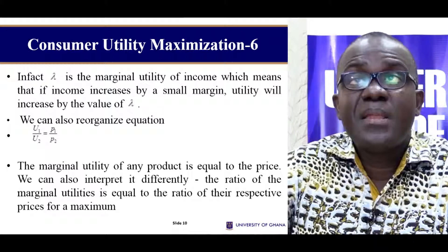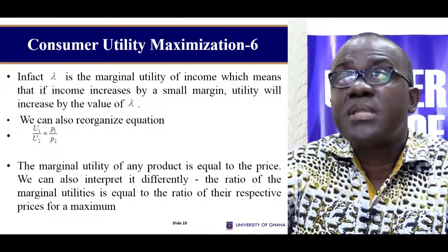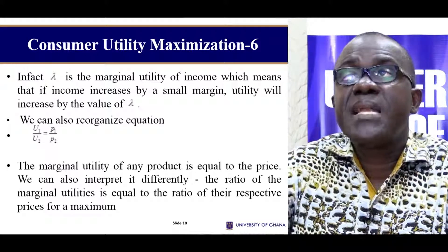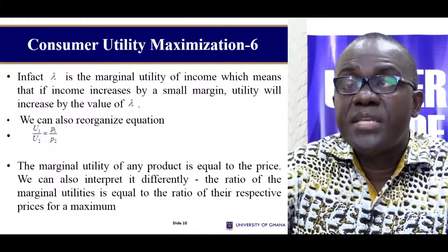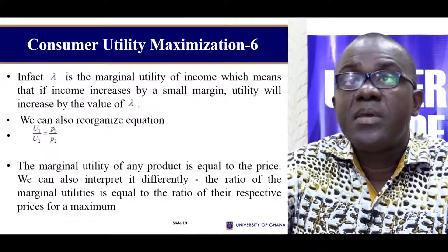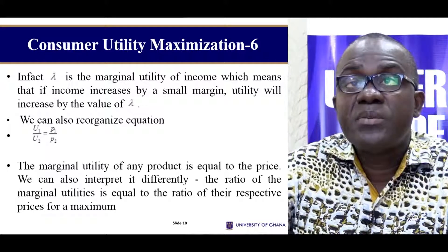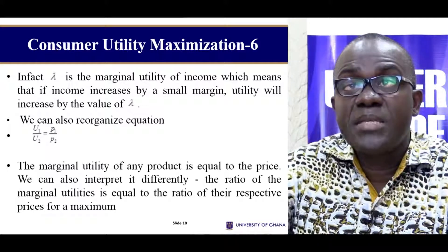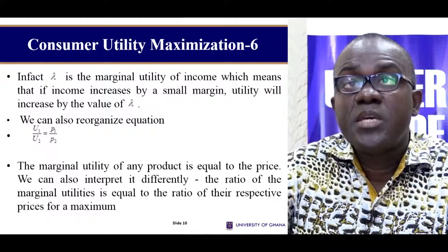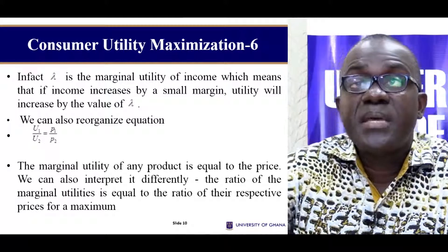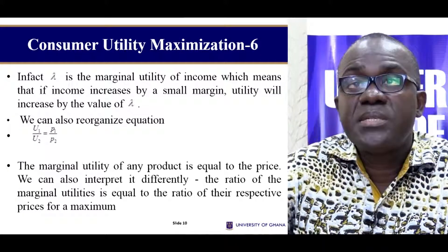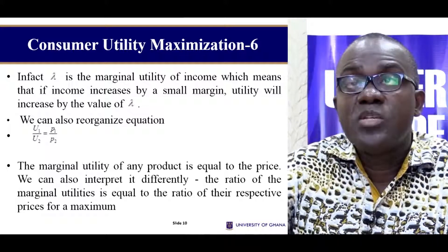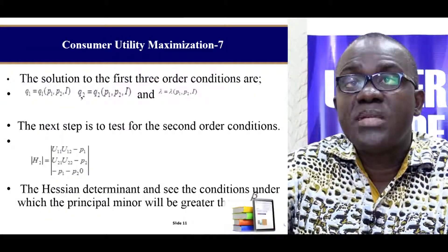Lambda is the marginal utility of income, which means that if income increases by a small margin, utility will increase by that small margin. We can also have this relationship: the marginal utility with respect to the first commodity. The ratio of the marginal utilities is equal to the price ratios. These conditions we use to do analysis of the utility function.